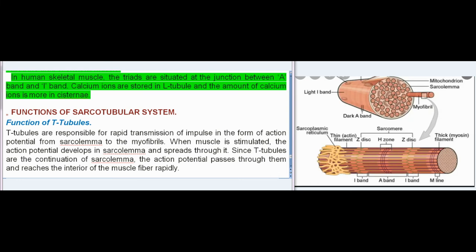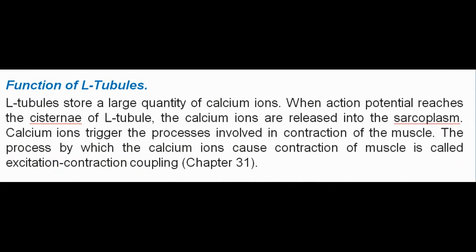Functions of Sarcotubular System - Function of T-tubules: T-tubules are responsible for rapid transmission of impulse in the form of action potential from sarcolemma to the myofibrils. When muscle is stimulated, the action potential develops in sarcolemma and spreads through it. Since T-tubules are the continuation of sarcolemma, the action potential passes through them and reaches the interior of the muscle fiber rapidly. Function of L-tubules: L-tubules store a large quantity of calcium ions. When action potential reaches the cisternae of L-tubule, the calcium ions are released into the sarcoplasm. Calcium ions trigger the processes involved in contraction of the muscle. The process by which the calcium ions cause contraction of muscle is called excitation-contraction coupling, Chapter 31.